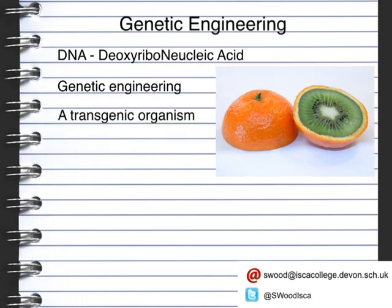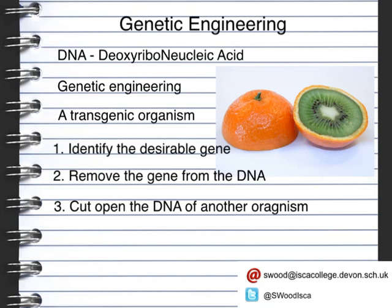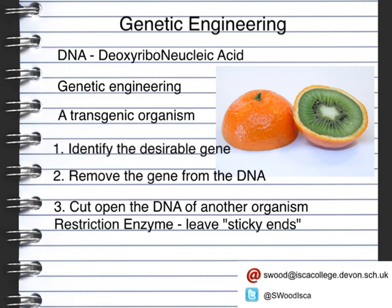In order to do this, there are several stages. The first is to identify the desirable gene. The second is to remove the gene from the DNA. Thirdly, cut open the DNA of another organism. This is done using a restriction enzyme, and this leaves sticky ends of the DNA. The new gene then works in the transgenic organism, and the transgenic organism is then cloned.